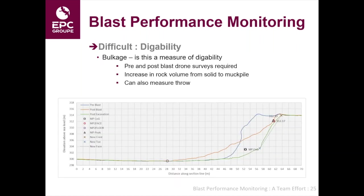In terms of digability, one of the things we look at which can be measured is bulkage — how much more volume does the rock take up in the muck pile than it took up in the solid. Again, we do that with drone surveys: a pre- and post-blast drone survey, generally with a post-excavation survey as well, and we look at the increase in rock volume. We can also measure the throw. I've shown a cross section through one of these models — the blue line shows the pre-blast, the green line shows the post-blast, and the red line shows the muck pile. The measurement we favour is the centre of gravity of the muck pile as a measure of throw.